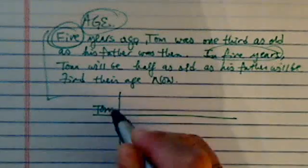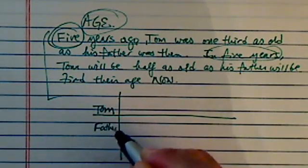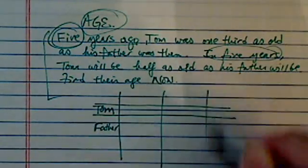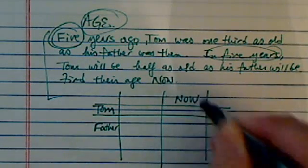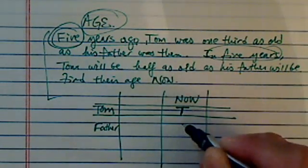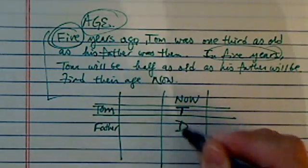We have Tom's age here, we have a father's age. Let's start with our variable here. Their age now, let's say T for Tom's age, and then let's call father's age as D.